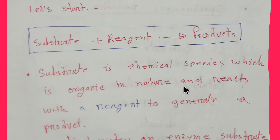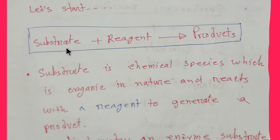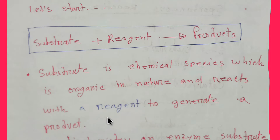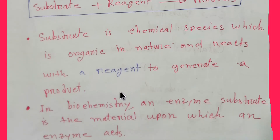Substrate is a chemical species which is organic in nature and reacts with a reagent to generate a product. In a chemical reaction, substrate is attracted by reagent. On the other hand, reagent is the attracting species which attacks the substrate to produce the product.